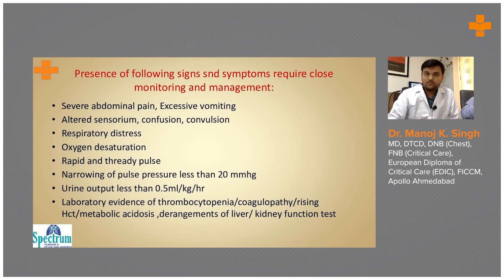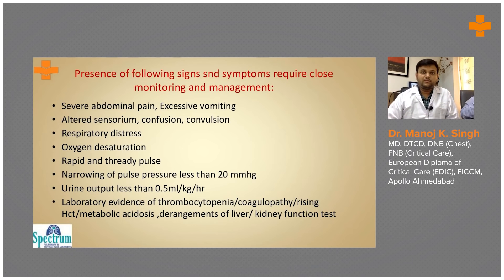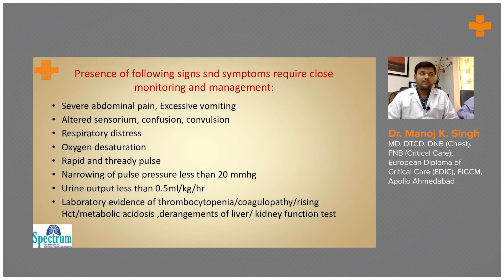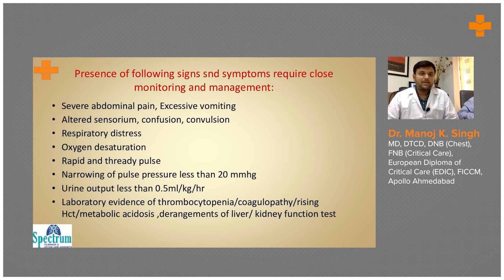The following signs require close monitoring as part of the spectrum of severe dengue: severe abdominal pain, excessive vomiting, altered sensorium, confusion or convulsions, and respiratory distress evident by oxygen desaturation.